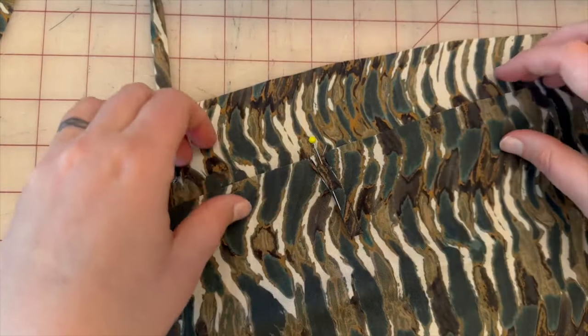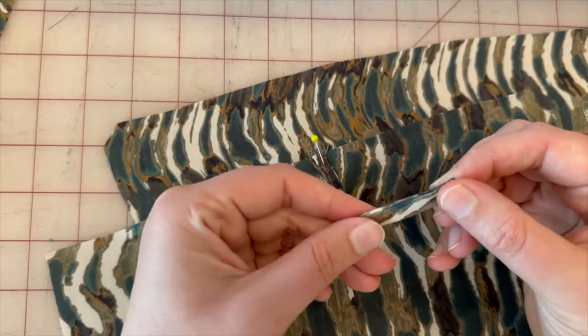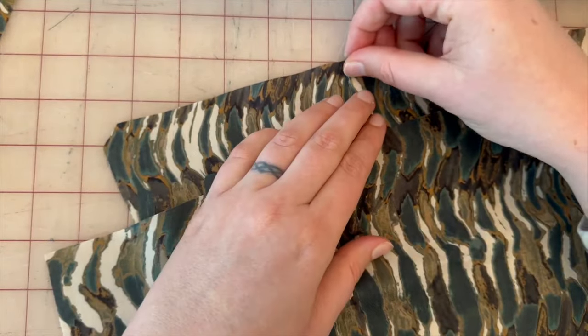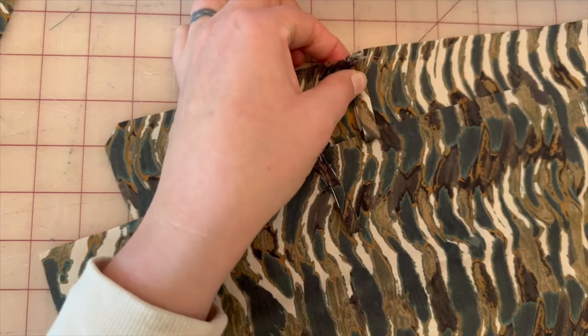Once I have it pinned properly, I'm going to go ahead and stay stitch. Again, this is my main fabric pattern piece two, not my lining. I'm going to do the same thing here, fold it in half, and then I'm going to pin and stay stitch.